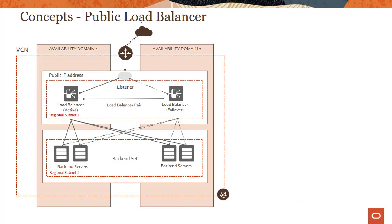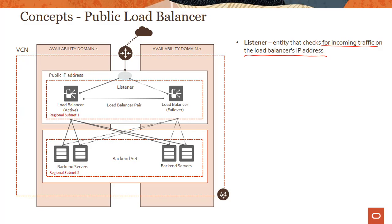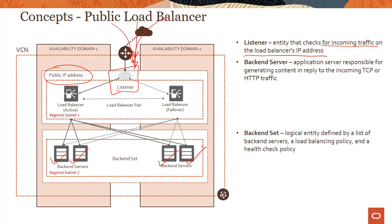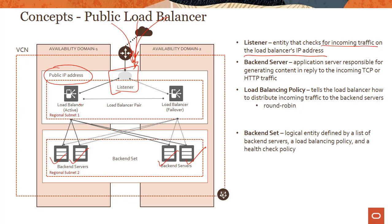Let's look at some key concepts in more detail. The first is the listener, which is the component that checks for incoming traffic on the load balancer's public IP address. Backend servers are the application servers responsible for generating content in response to incoming TCP or HTTP traffic — requests come in and responses go out from the backend servers. There's also a load balancing policy, which tells the load balancer how to distribute incoming traffic to backend servers, with a choice of round robin, IP hash, and least connection algorithms.